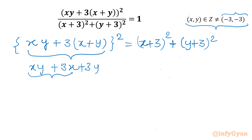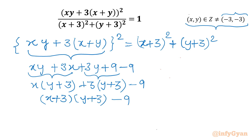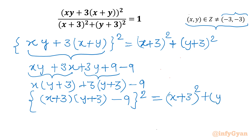From the first two terms, we can take x common, giving x(y plus 3). Then adding and subtracting 9, we can take 3 common from the remaining terms, giving 3(y plus 3) minus 9. Taking (y plus 3) common, this becomes (x plus 3)(y plus 3) minus 9. So the left-hand side whole square equals (x plus 3) whole square plus (y plus 3) whole square.